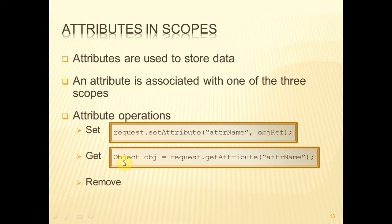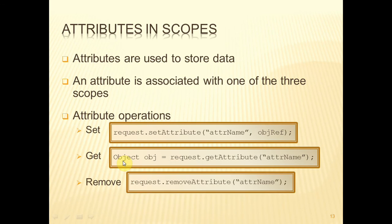We'll show an example of that a bit later. If we wish to remove the attribute from the scope, then we call from request the removeAttribute method. And again, we must specify the name exactly as it was spelled when the attribute was set.